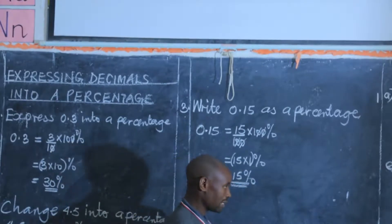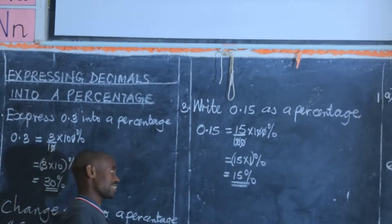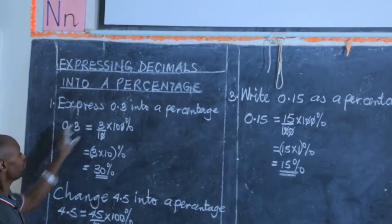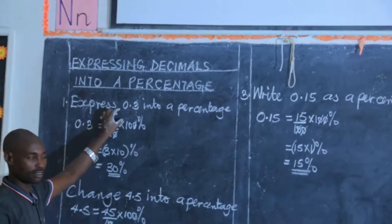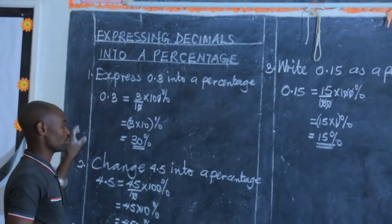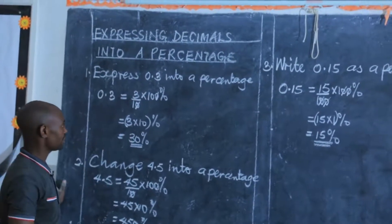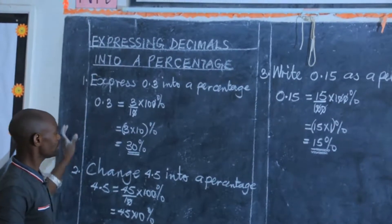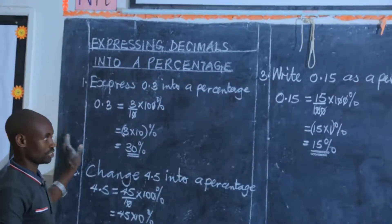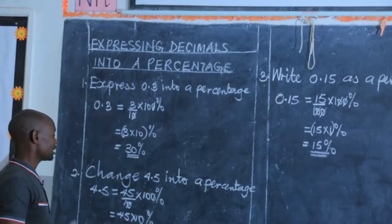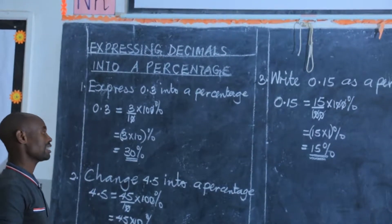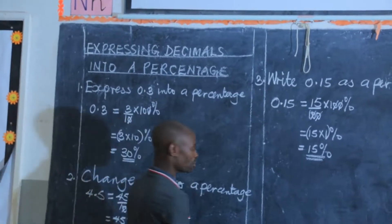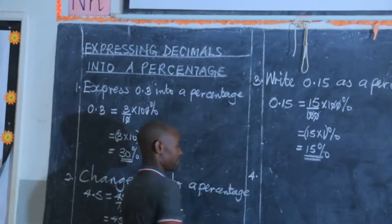The point of emphasis in this lesson is changing from decimal numbers to common fractions. After changing the given decimal numbers into common fractions, you then do what we did in the previous lessons, as you have just seen. Let's have one more example — example 4.